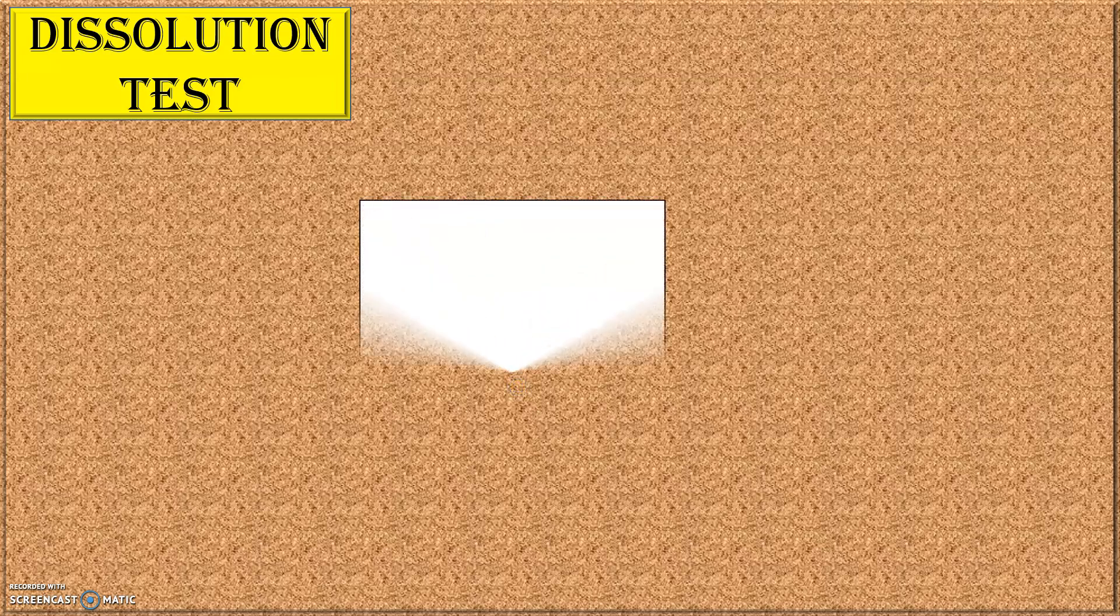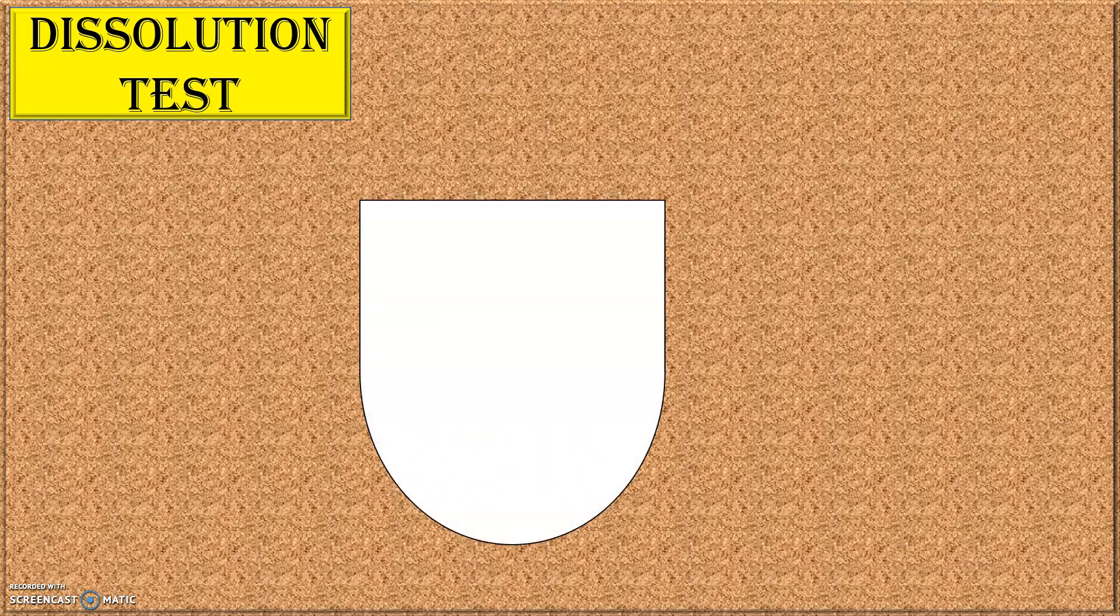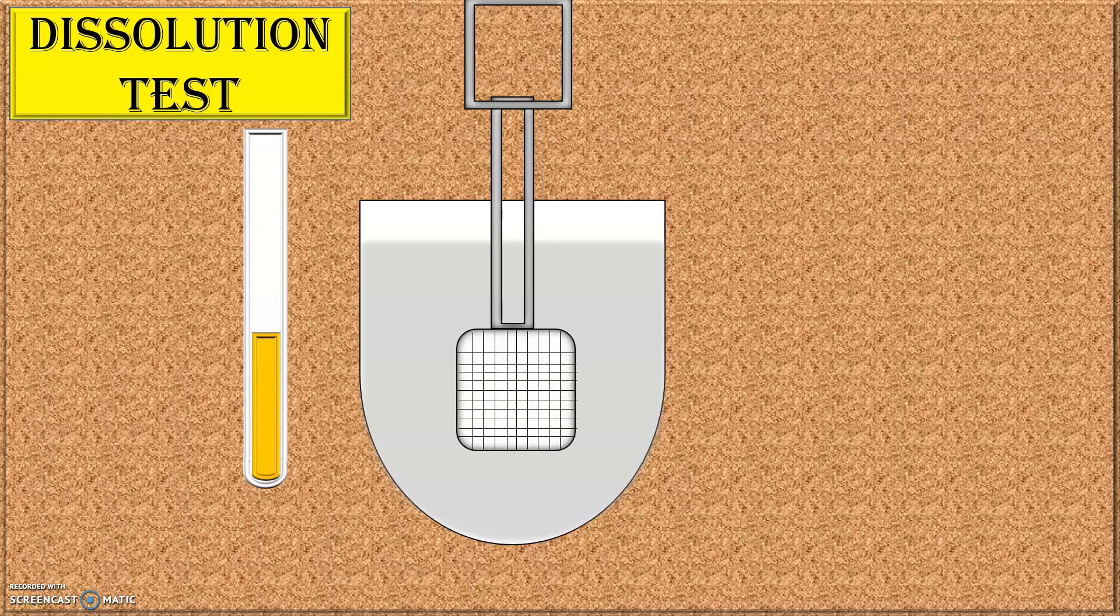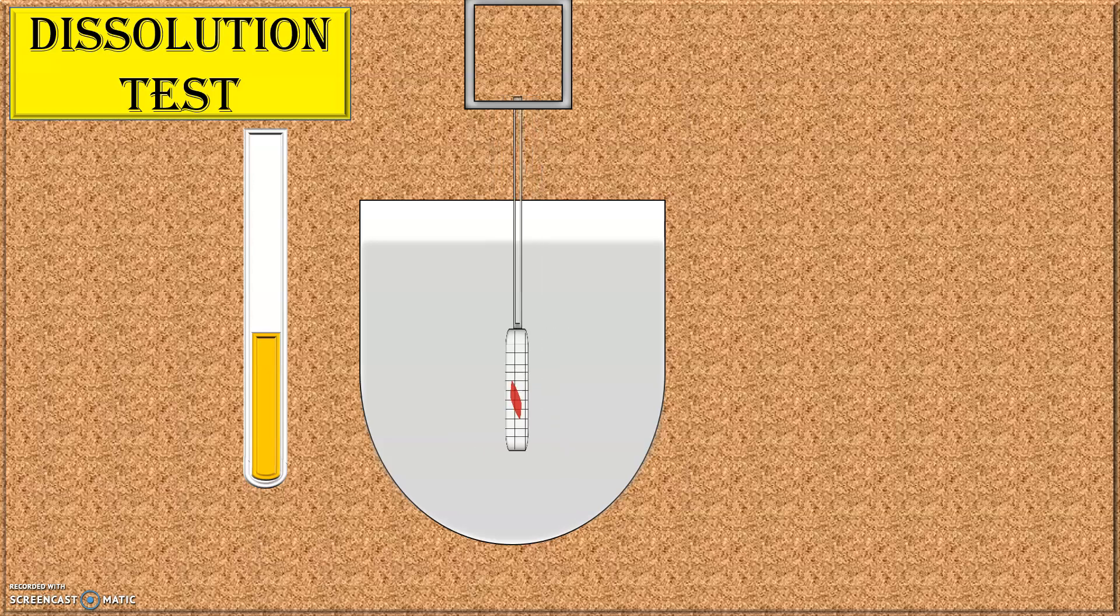Now let us see the diagram of dissolution test. As we have studied in the construction, it consists of a cylindrical vessel in which the dissolution medium is placed. To check the temperature, a thermometer is used. To the electric motor, a shaft is attached. And to the shaft, the basket is attached. And in the basket, the tablet of which the dissolution test is to be carried out is placed and it is started.